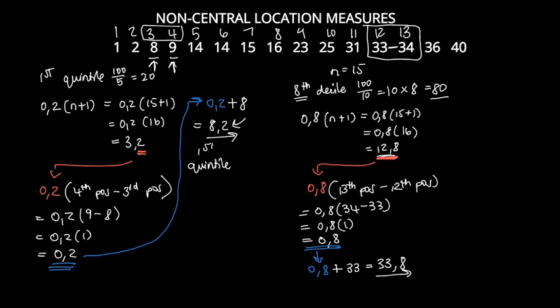We add 0.8 to the 12th position value of 33, giving us 33.8. The eighth decile of our data set is 33.8 — it's greater than 33 but less than 34.